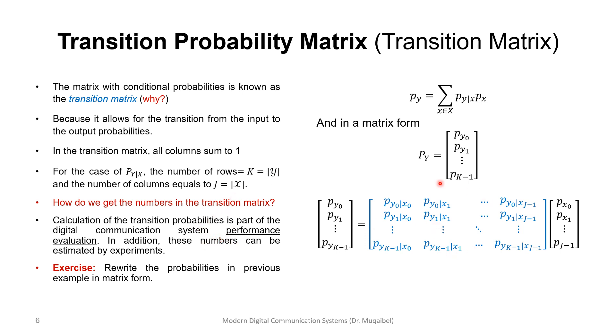How do we get the numbers in this transition matrix? In real life, we can do performance evaluation. If we have a cable or whatever, we can try different experiments. We can initiate an experiment where we send a sequence of bits or symbols and measure the probability of receiving the output. We have to do the experiment multiple times, or we can theoretically do performance evaluation or simulation. This is done through experiments, simulation, or theoretical performance evaluation.